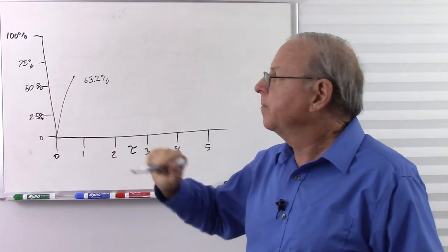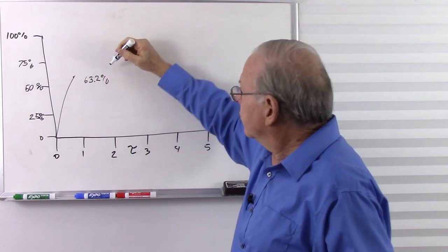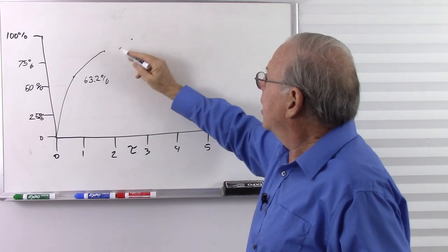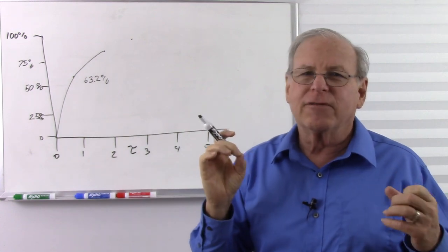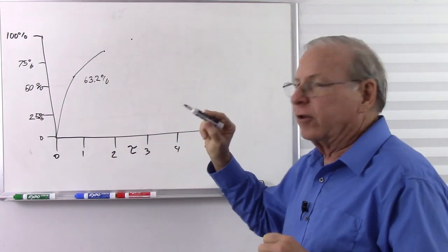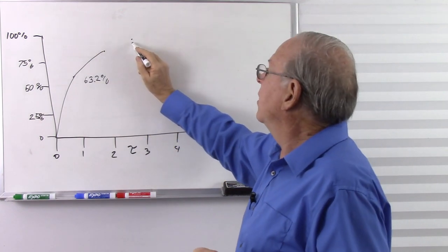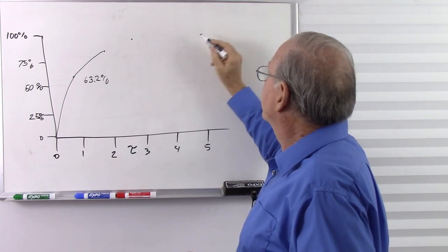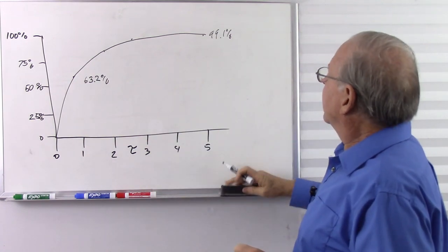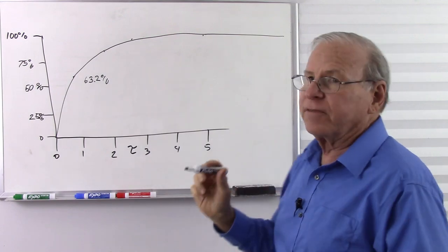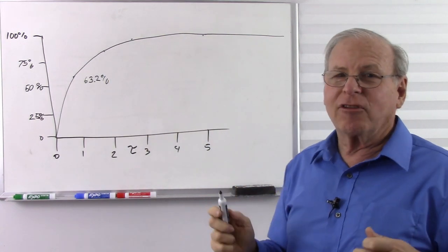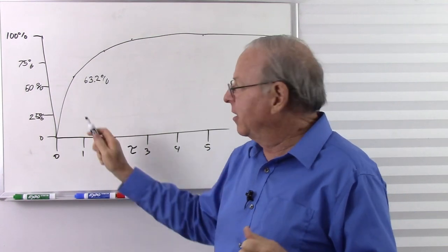After three time constants, we go another 63.2% of what's left over. I don't give the actual numbers, but you can always calculate it knowing that each time constant you reach 63.2% of the remaining voltage. Eventually, after five time constants, we have reached 99.1 or 99.2% of the source voltage, and it can't charge anymore — we basically flat line. For 1 ohm and 1 farad, this takes 5 seconds; for 100 ohms and 100 microfarads, it happens in a couple of milliseconds.